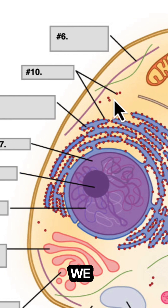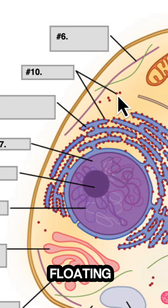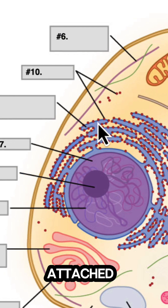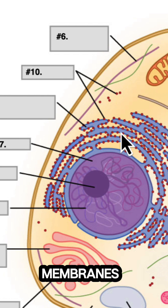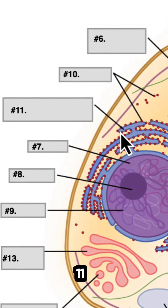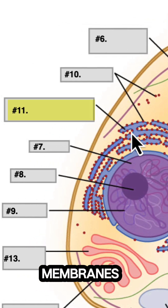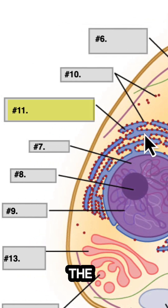Number ten: what are these little red dots? We find them floating freely as well as attached to these purple membranes. Number eleven: name the purple membranes that have the red dots on them.